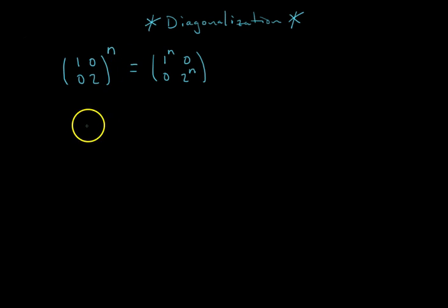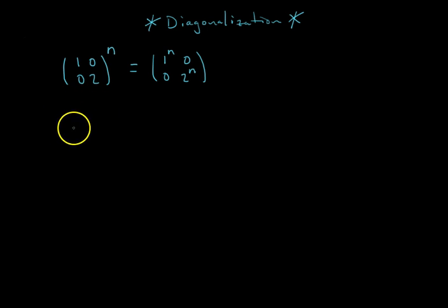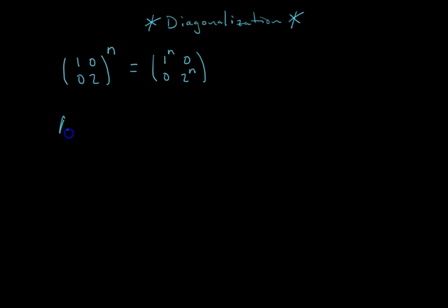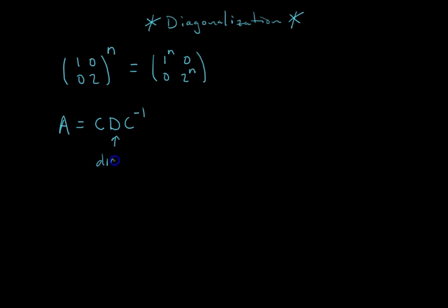If you don't have a diagonal matrix, it's really hard to raise it to like the hundredth power. But if you have a diagonal matrix, it's easy because you can just distribute the power to the entries on the main diagonal. In this video we're going to do the process called diagonalizing a matrix. If a matrix is diagonalizable — which it's not always — you can write it as the product of three matrices: C times D times C⁻¹, where D is a diagonal matrix.